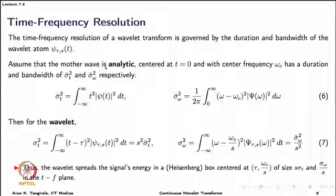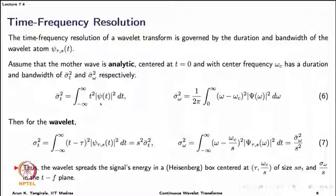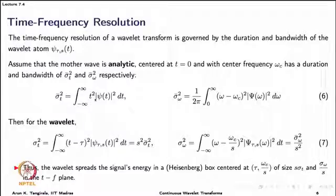To determine the box widths, we start with the wavelet. Since we use analytic wavelets, let us assume an analytic mother wavelet centered at t = 0, with center frequency omega_c, and denote its duration and bandwidth by σ²_t̄ and σ²_ω̄. The expressions for these in equation 6 follow directly from the definitions of duration and bandwidth from unit 4. Note that since the mother wavelet is centered at 0 in time, we only have t² in the duration expression.